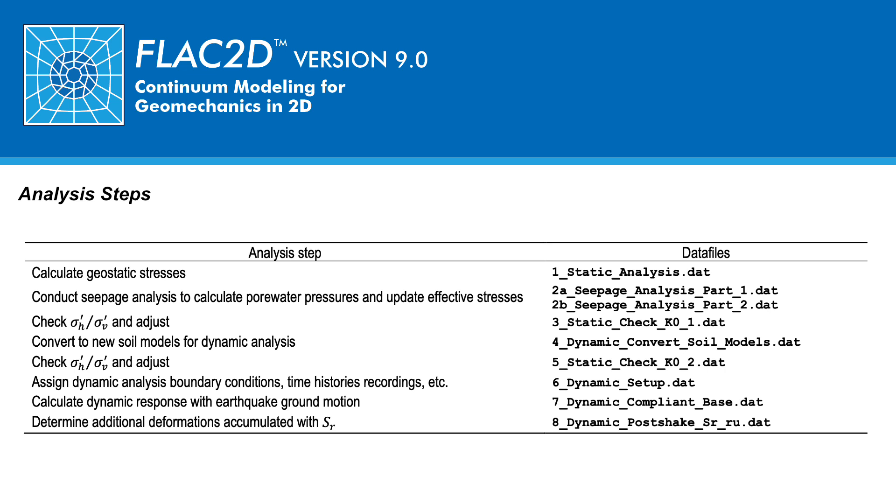In the fifth analysis step, the ratio of the horizontal to vertical effective stresses is checked again and attempted to be adjusted if unrealistic. In the sixth analysis step, the boundary conditions and damping characteristics of the model are changed, certain constitutive model parameters updated, and time history recordings assigned.